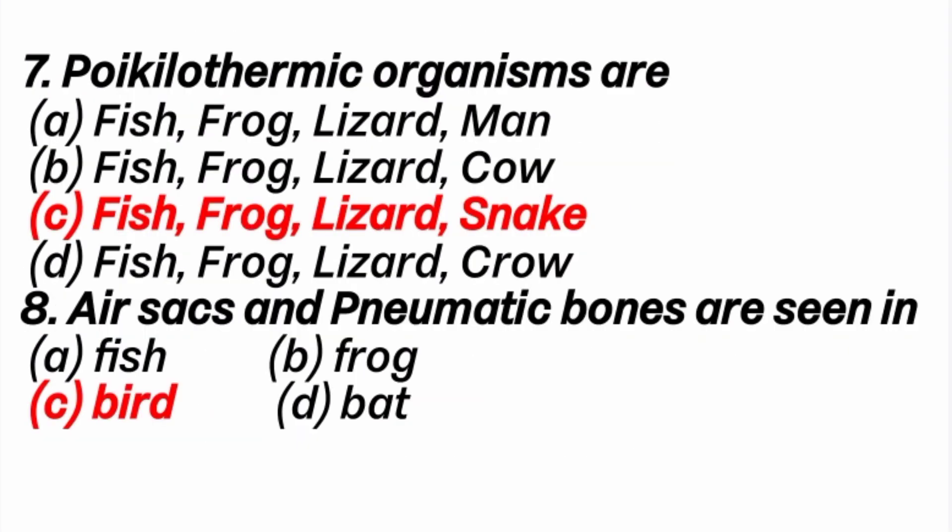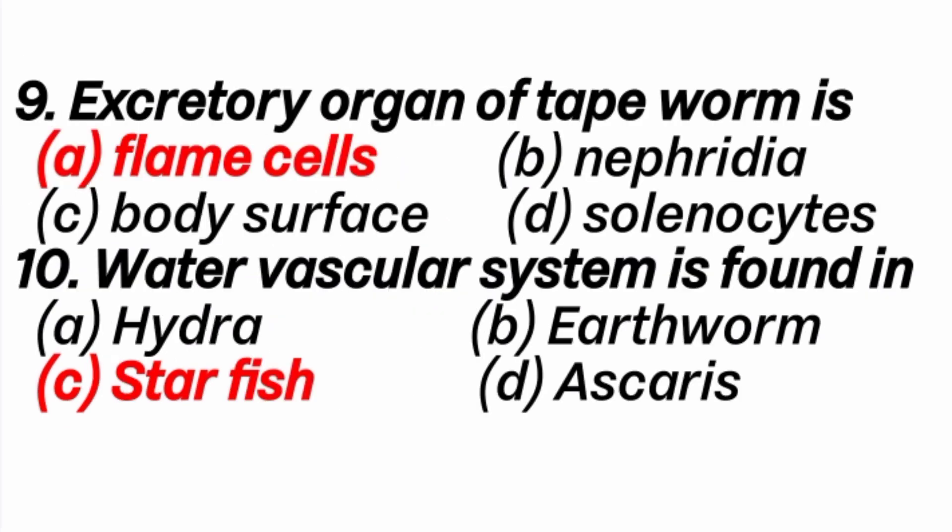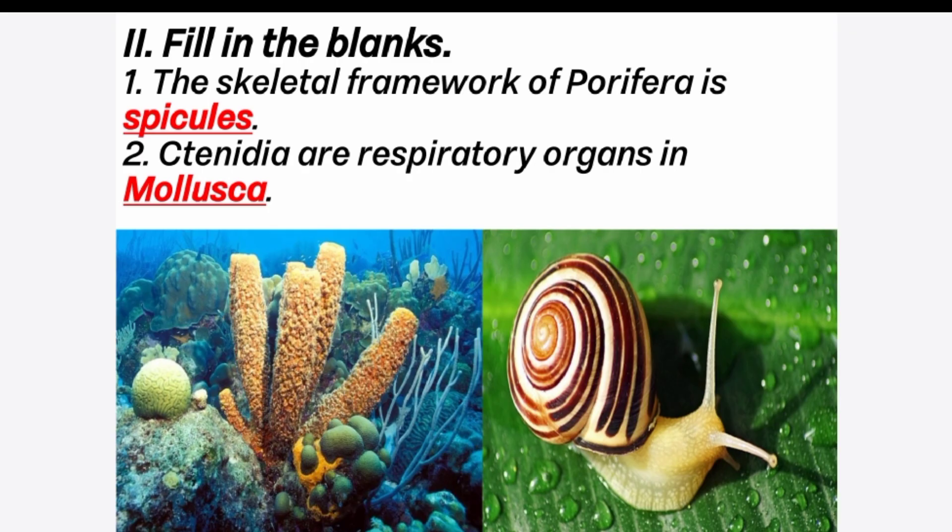Seventh question: poikilothermic organisms are — answer is C option: fish, frog, lizard, and snake. Eighth question: air sacs and pneumatic bones are seen in — answer is C option, bird. Ninth question: excretory organ of tapeworm is — answer is A option, flame cells. Tenth question: water vascular system is found in — answer is C option, starfish.